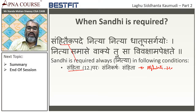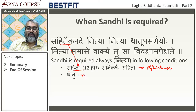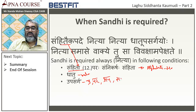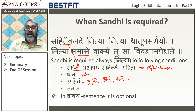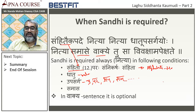Samhitaikapade Nityam Dhatu Upasarga Yohu — when you are using Dhatu (the verb) with Upasarga, examples being Pra, Para, Apa, Sama, Sandhi is required Nityam. In Samasa also Sandhi is required. Sandhi is optional only in Vaakyetu — in a sentence when there is a distance between two alphabets, Sandhi is not mandatory. So the most important contexts are Samhita, Dhatu, Upasarga, and Samasa — wherever these occur, Sandhi is mandatory.